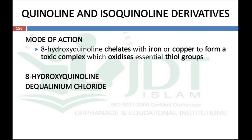The next group is quinoline and isoquinoline derivatives. The mechanism of action is that hydroxyquinoline chelates with iron or copper to form toxic complexes which oxidize the essential thiol groups of enzymes and proteins, thereby interfering with microbial growth. Examples are hydroxyquinoline and dequalinium chloride.